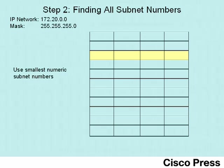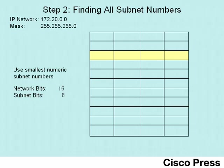A few things we can learn right away: because it's a Class B network, we know there are 16 network bits — the entire first two octets. The mask tells us that the first 24 bits are the combined network and subnet field. Knowing the first 16 bits are network bits, that means there are eight subnet bits — the whole third octet is the subnet part of the address structure. The host part of the addresses will be the final eight bits, or the entire fourth octet.